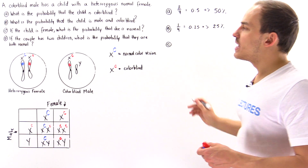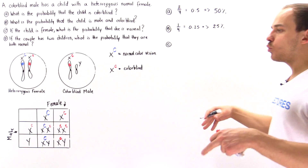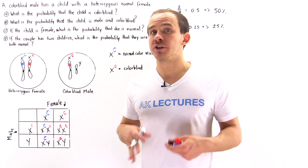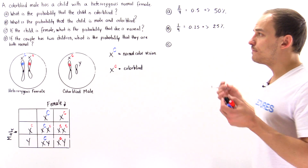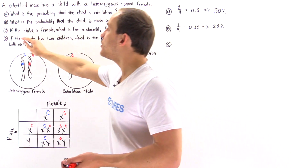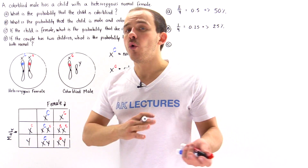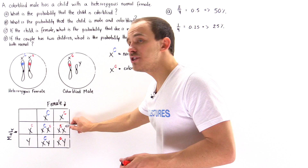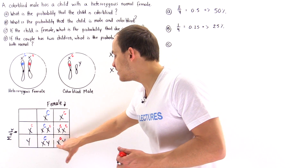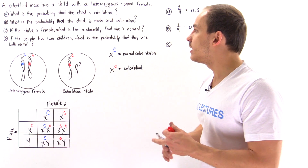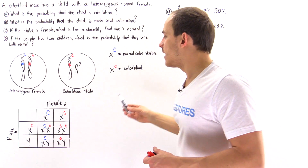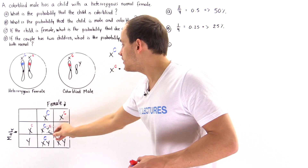For part C, if the child is female, we begin by assuming the child is in fact a female. Knowing the child is female, what is the probability she is normal? Because we know the child is female, we only look at the two female squares. We don't consider the two squares containing the Y chromosome, since those are male.